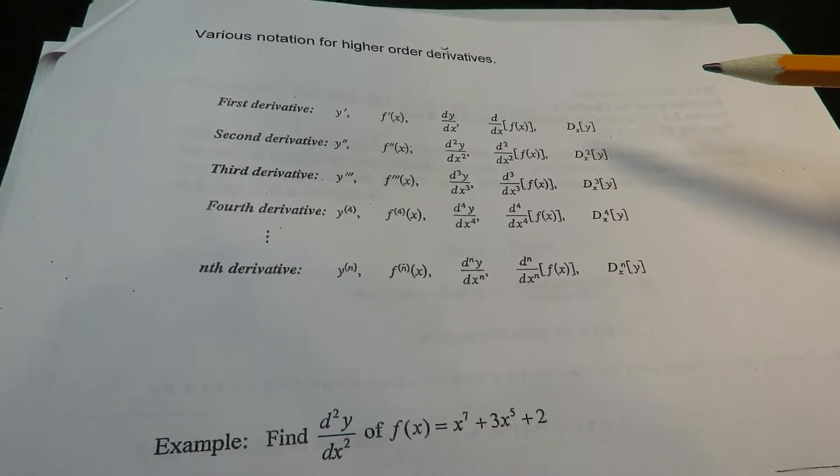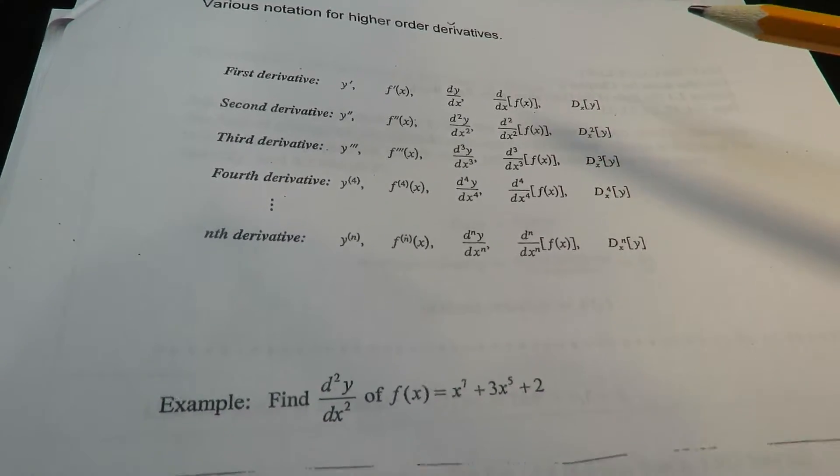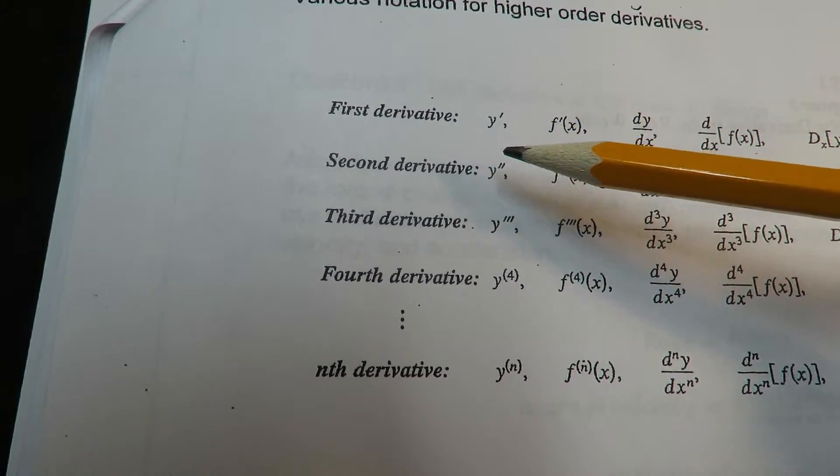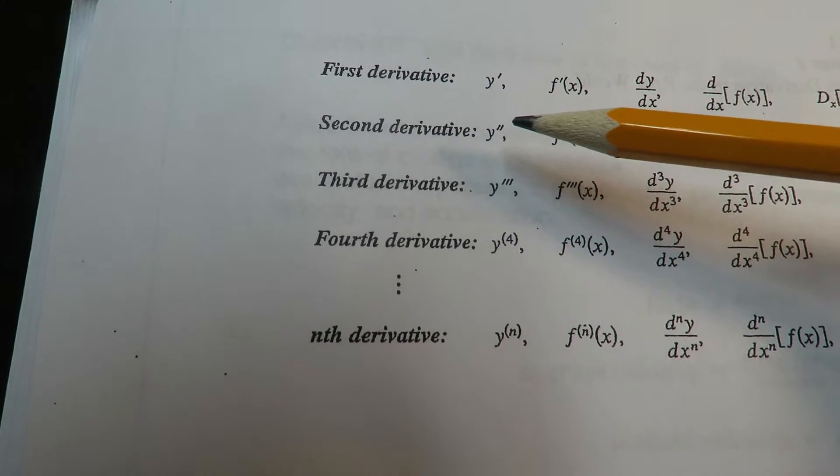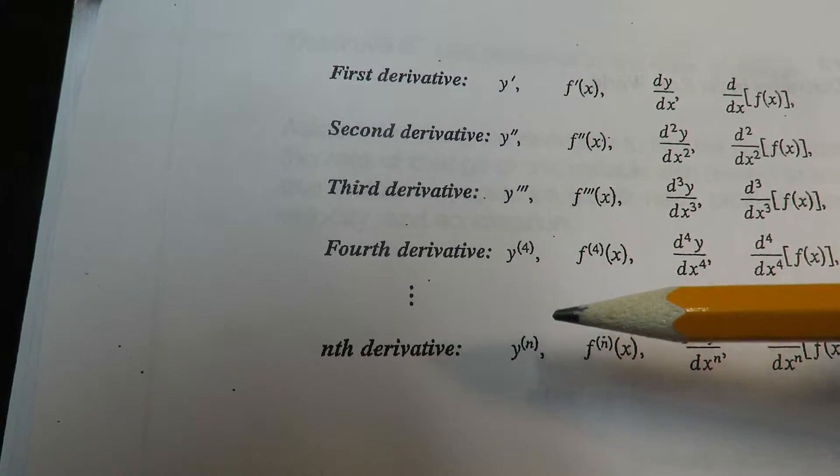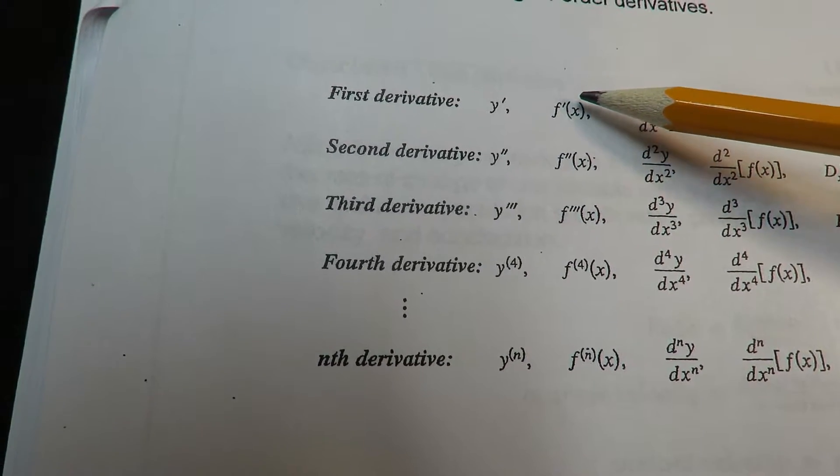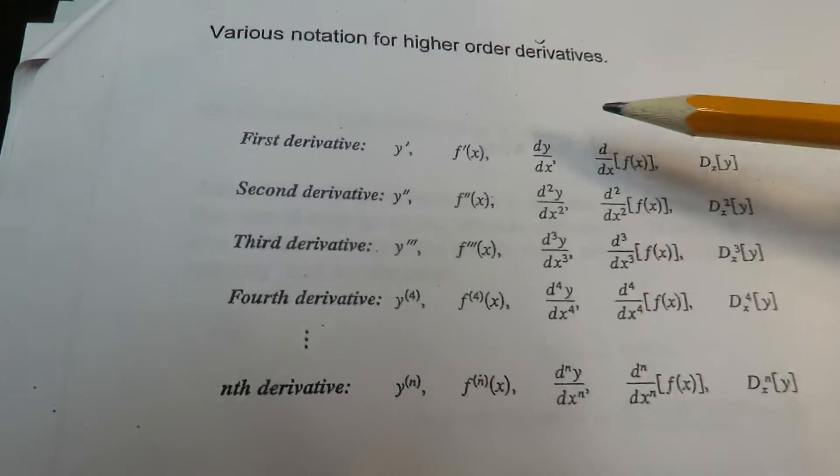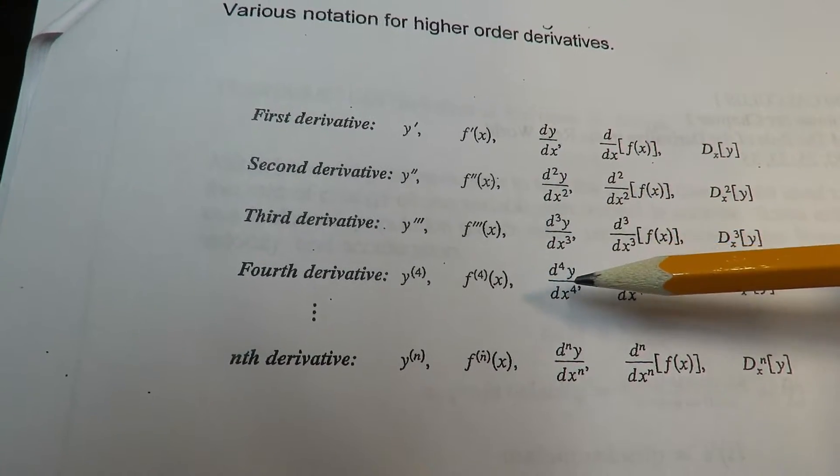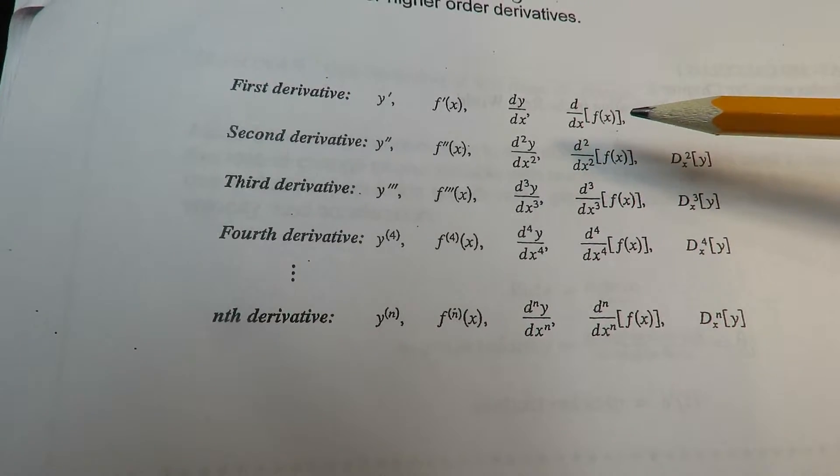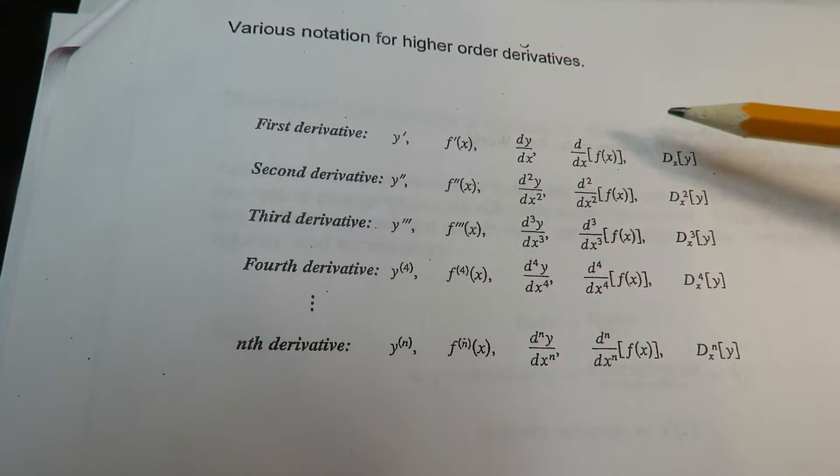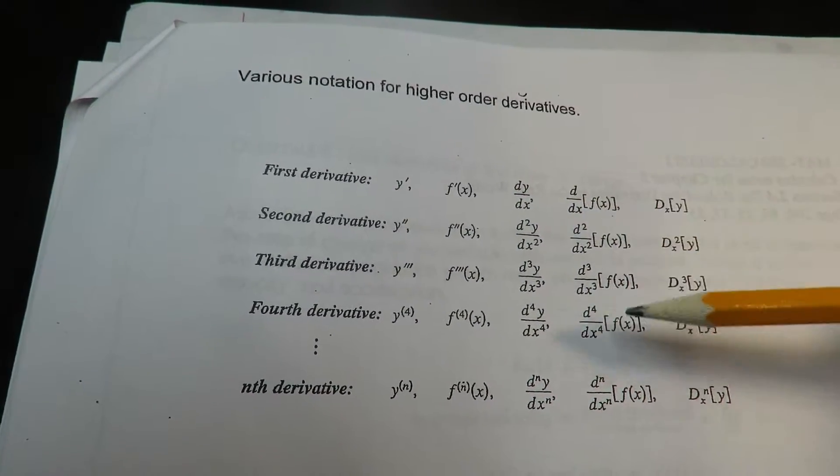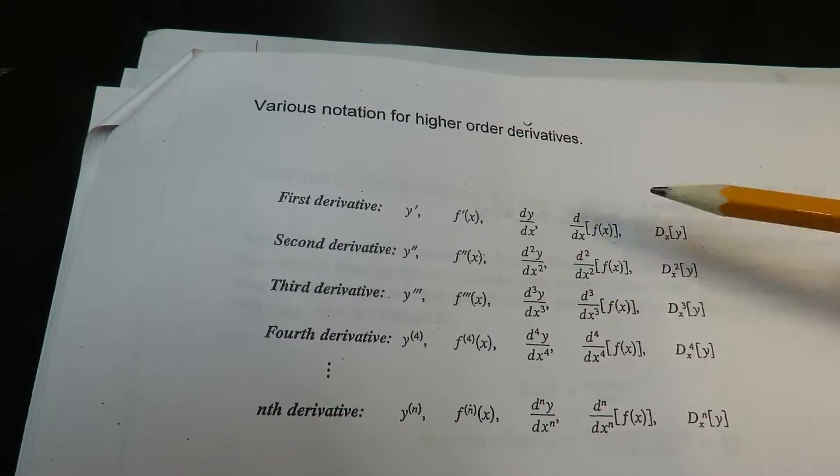Okay gang, we're going to talk about higher order derivatives now and this is the notation for it. This is the one I've been showing you: first derivative, second derivative, third derivative, fourth derivative, and to the nth derivative. You're also familiar with f prime, f double prime, third derivative and so on. This is the one we're going to get to shortly. These first three are the most common, though you will see some of these other ways too.